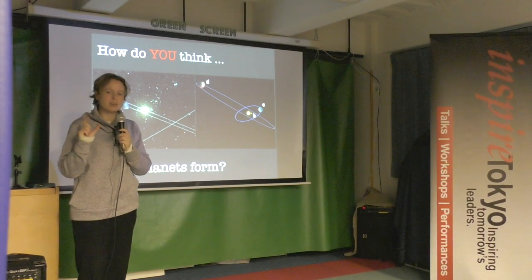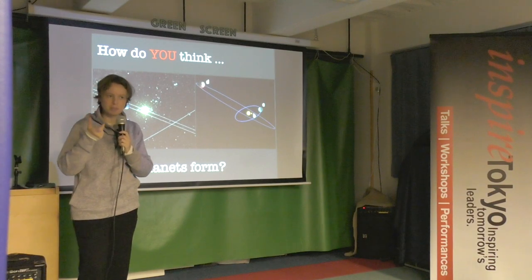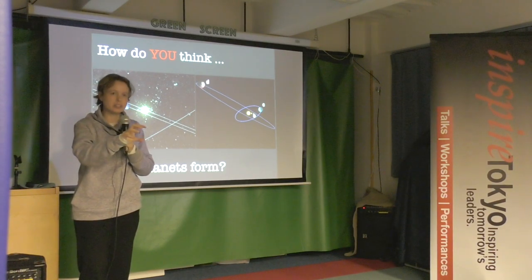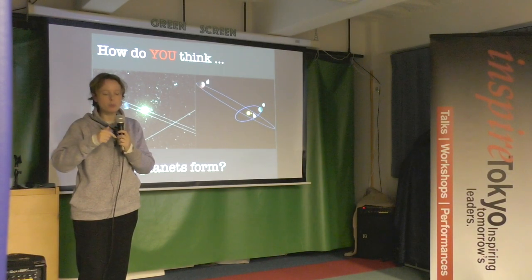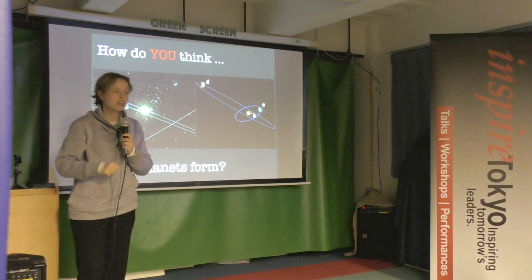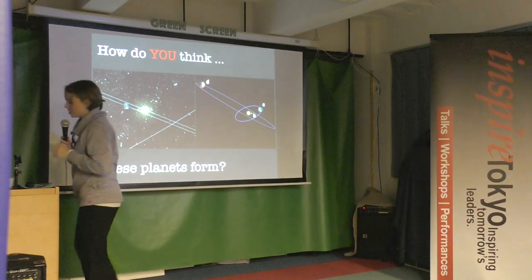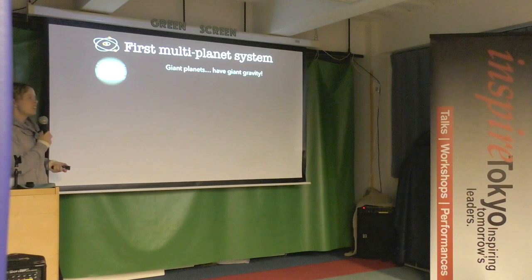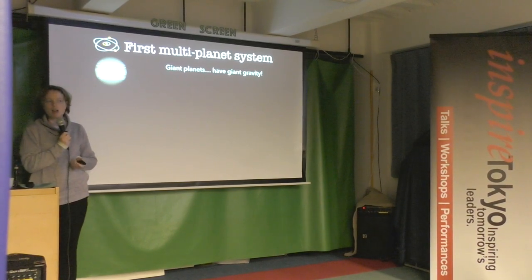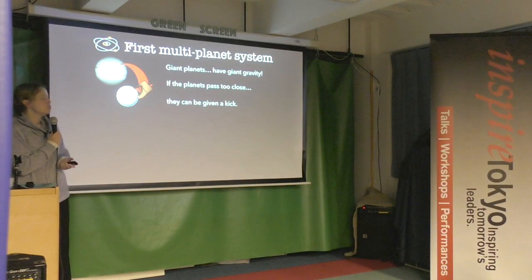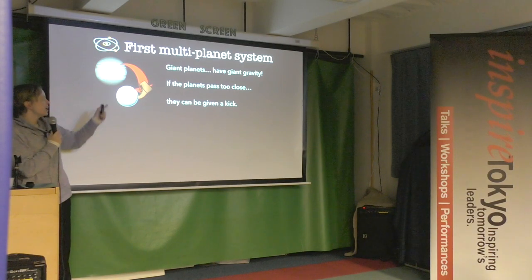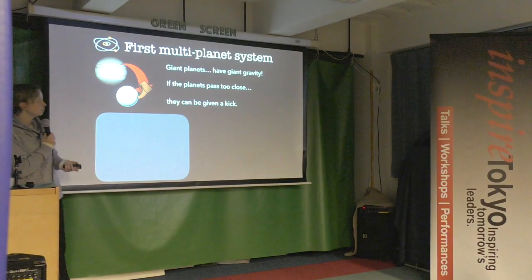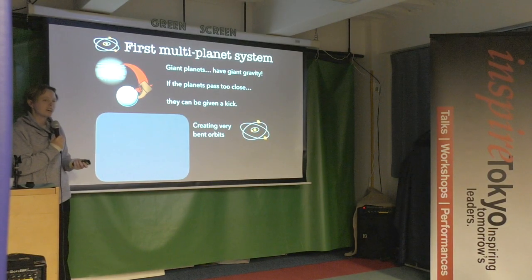The idea of multiple planet orbits getting confused is close to what we think actually happened. Giant planets have giant gravity, and if orbiting planets get too close — there can be a slingshot kick. Planet gravity pulls on the others and you end up with a slingshot effect that can scatter planets into very different orbits — very elliptical, at all kinds of angles — and can even eject a planet from the system entirely.